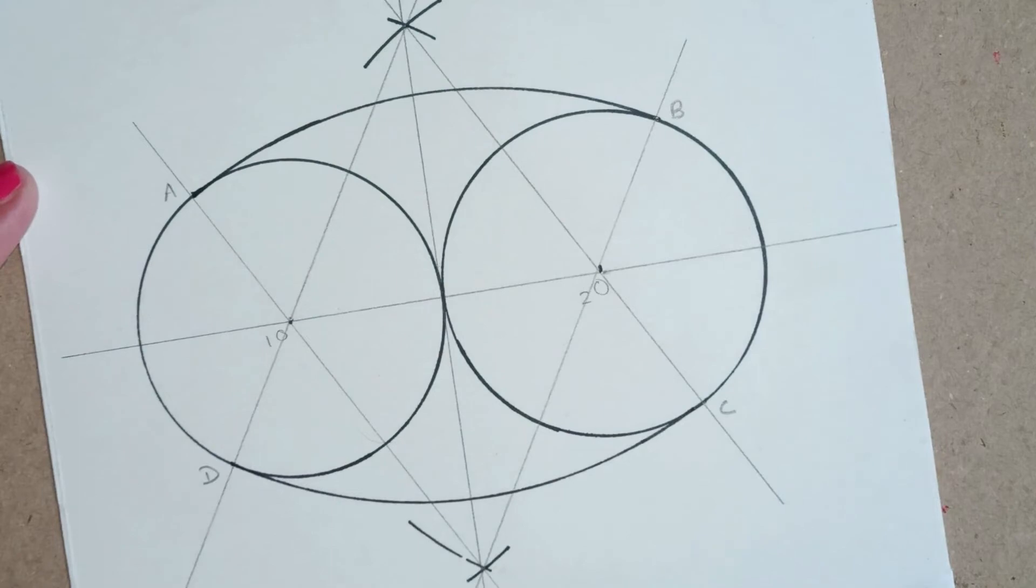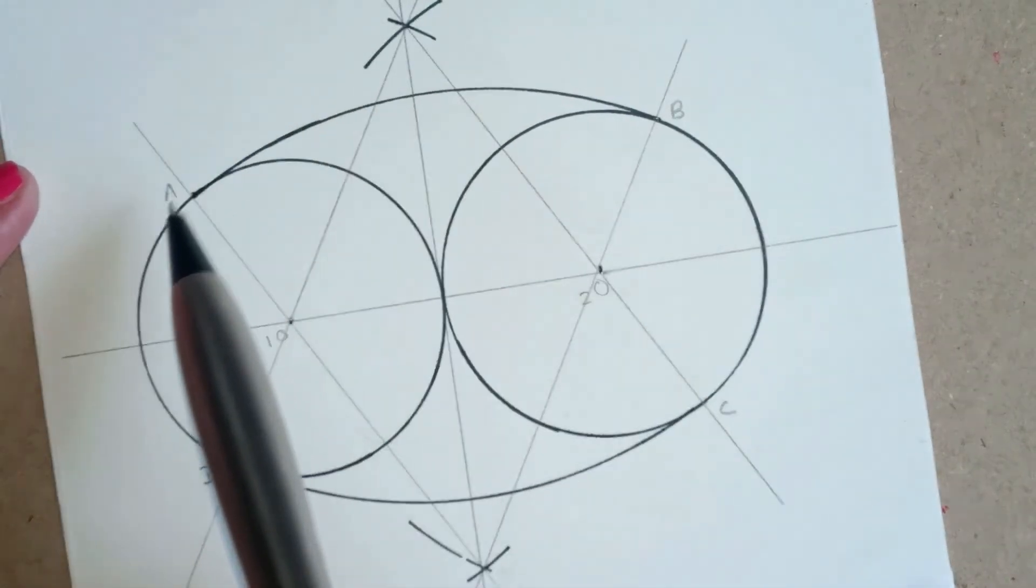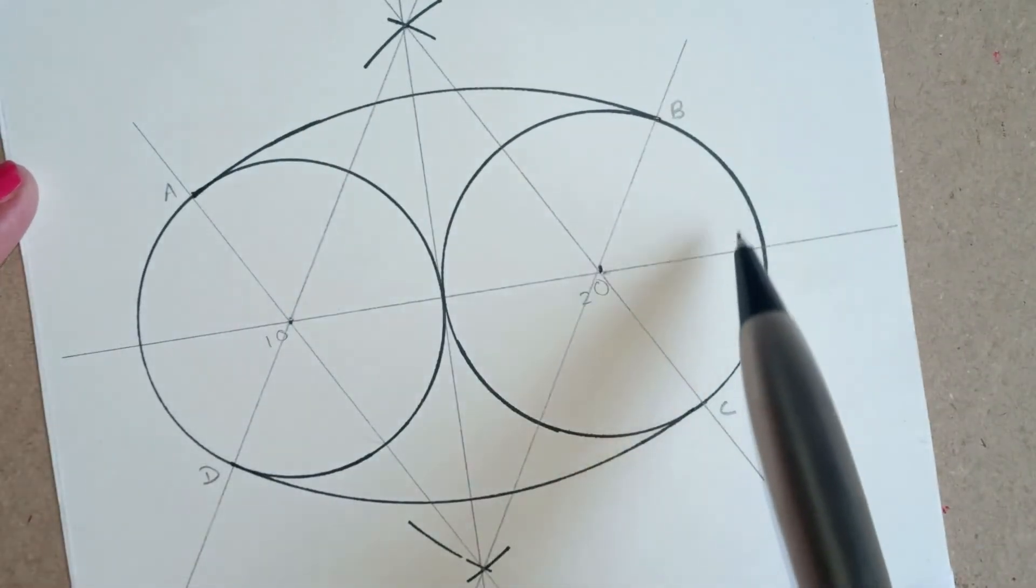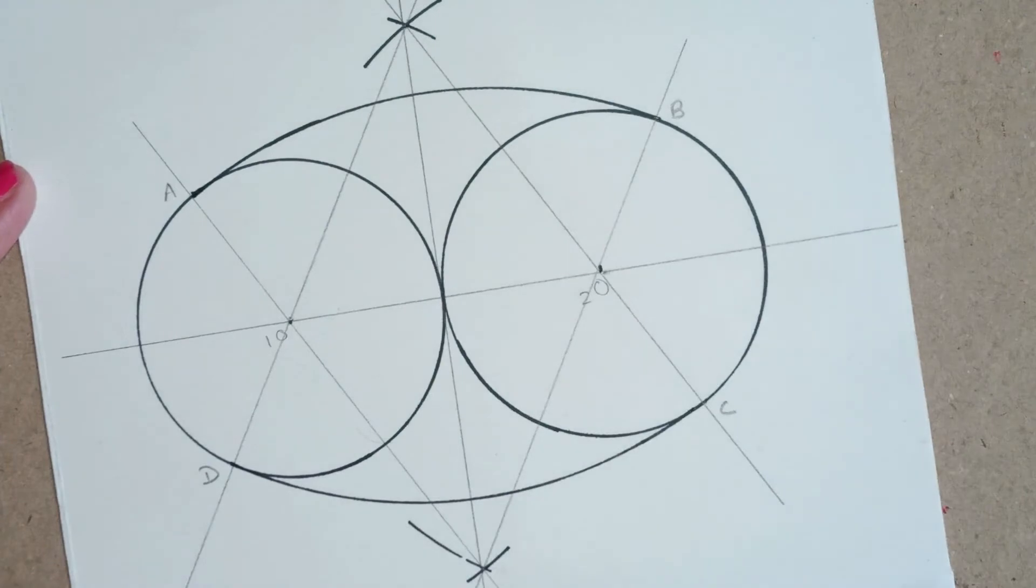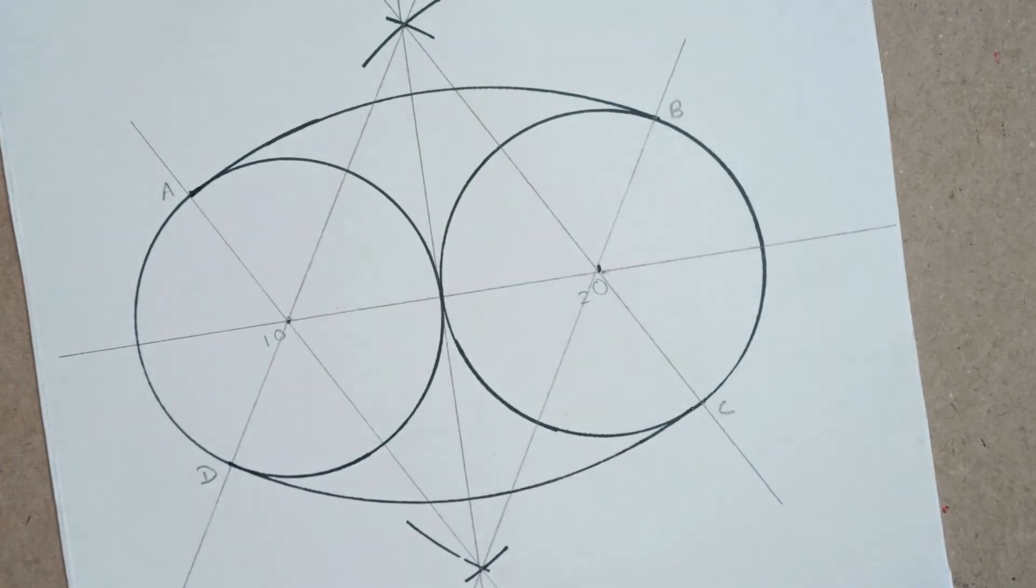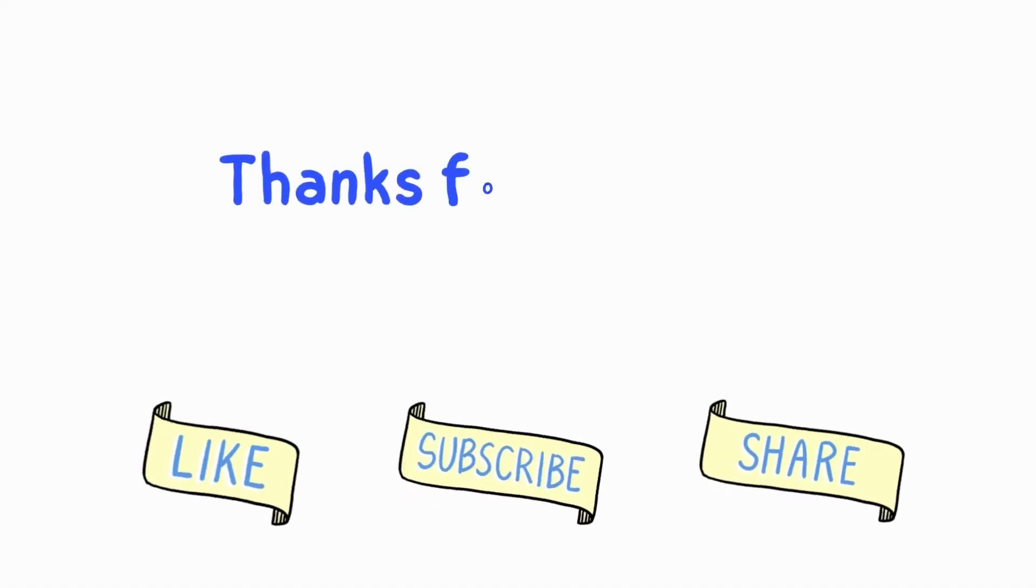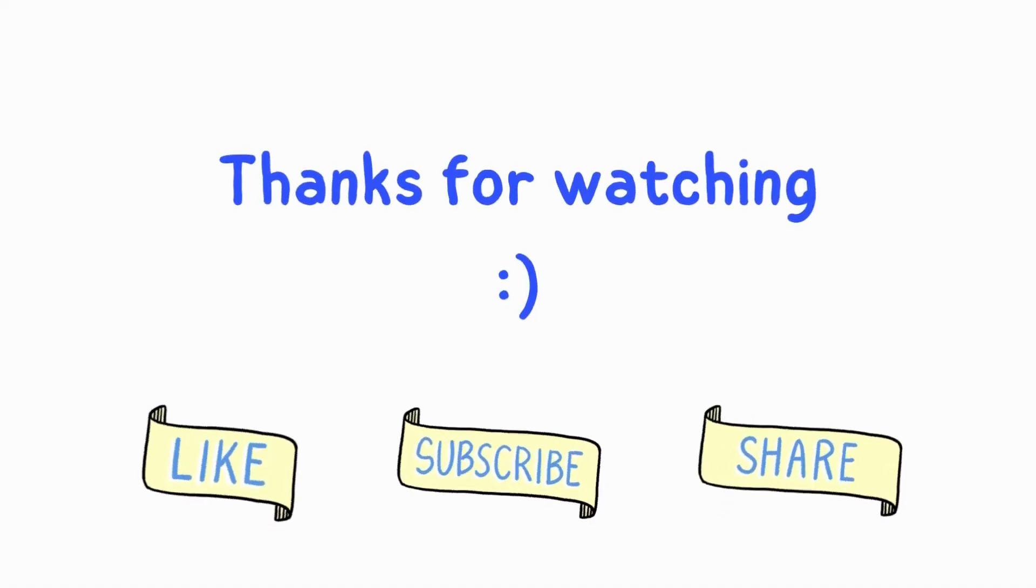So in this way we get our perfect ellipse with the help of a compass, a pencil, and a scale. If you like this video, please do subscribe to my channel and give it a thumbs up. I will come up with another video soon. Thank you.